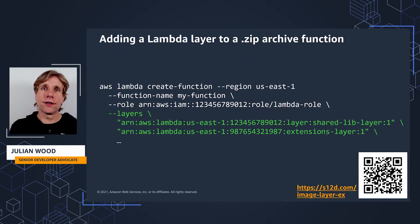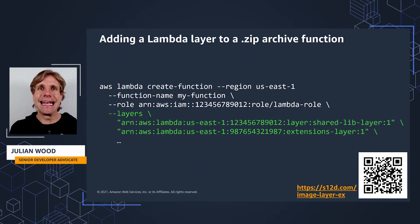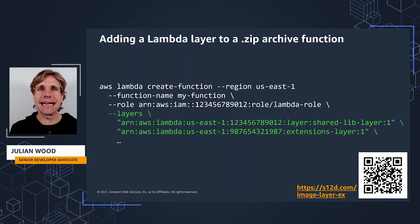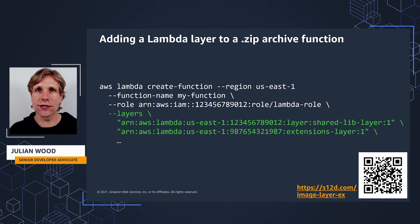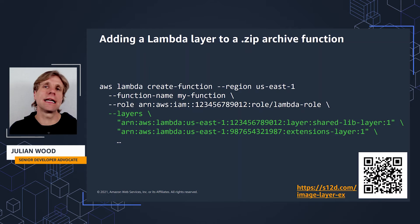Just to recap: for a function packaged as a zip archive, Lambda layers are added as part of the function configuration. This is done using the CLI during create-function or update-function with a --layers parameter, or you add layers using the Lambda console or infrastructure as code tools such as AWS SAM, the Serverless Framework, Terraform, or any others.